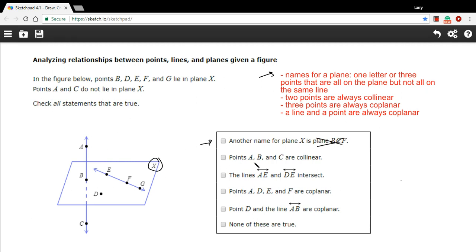The next one says points A, B, and C are collinear. And here are A, B, and C, and you can see a line running through all three. So they're definitely collinear. They're on the same line.